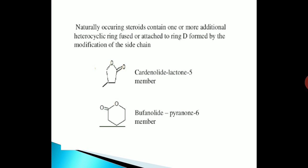Naturally occurring steroids contain one or more additional heterocyclic rings fused or attached to ring D, formed by modification of the side chain. As we can see here: cardenolide lactone — a 5-membered ring — and bufenolide pyranone — a 6-membered ring.